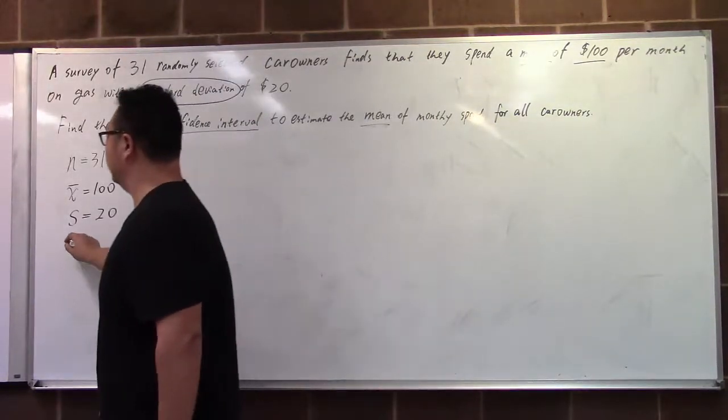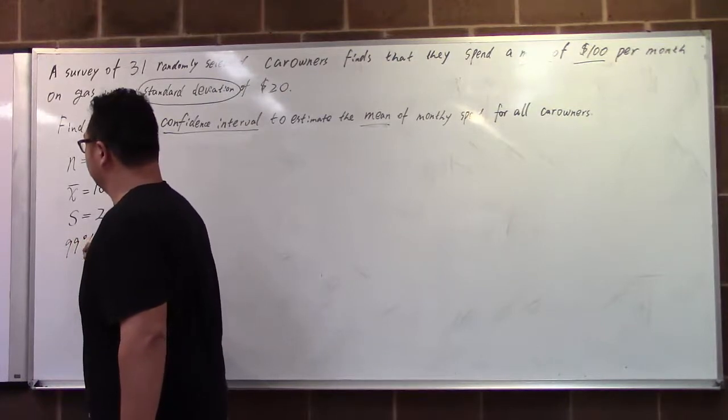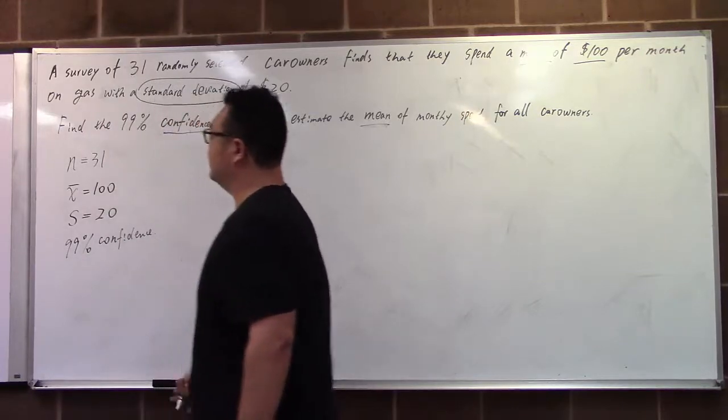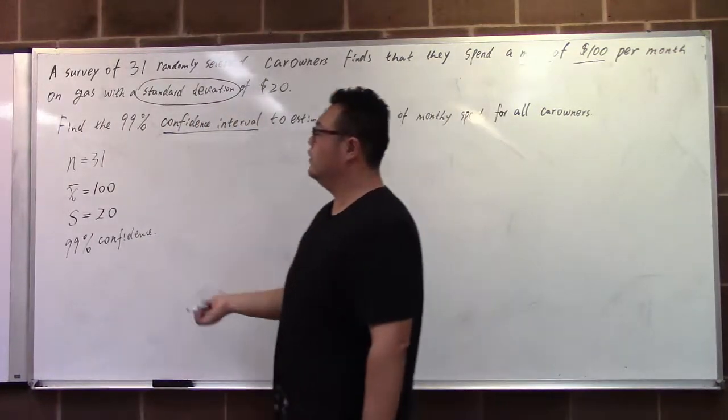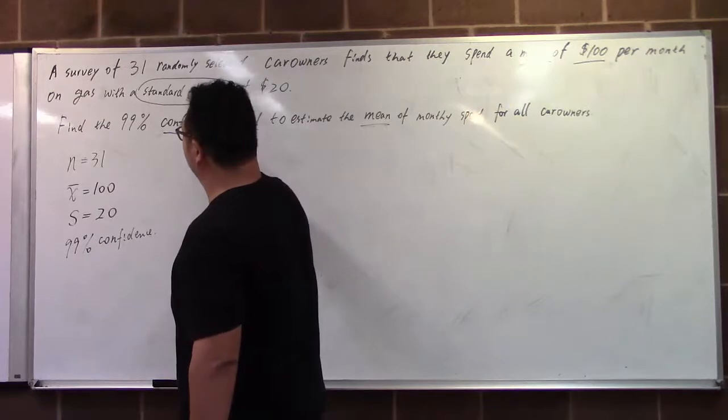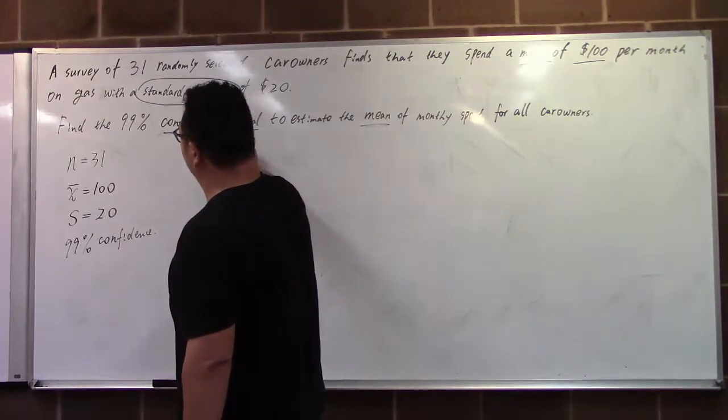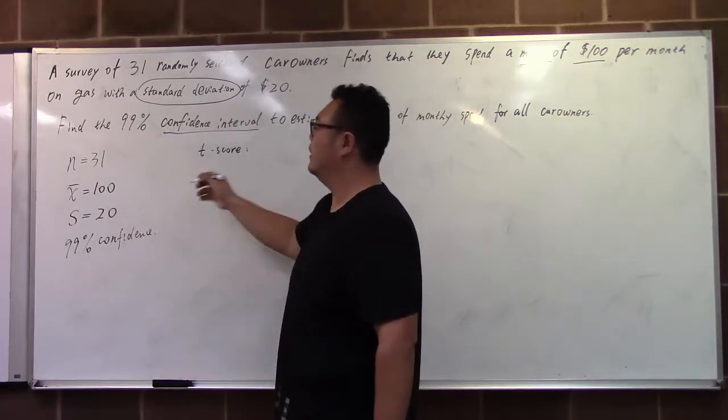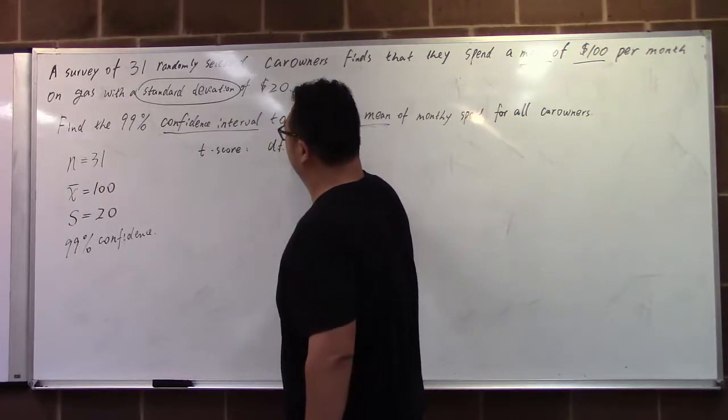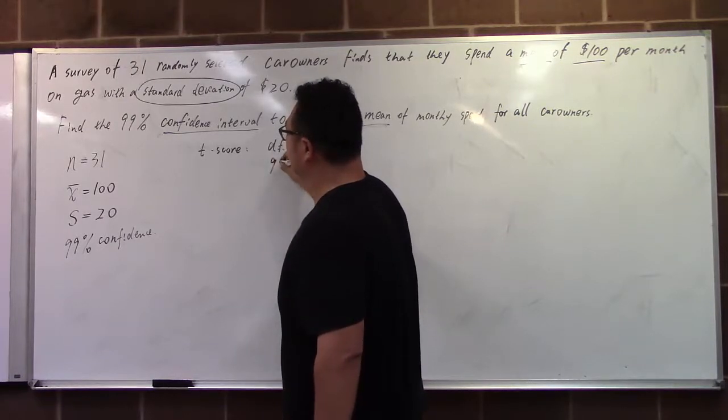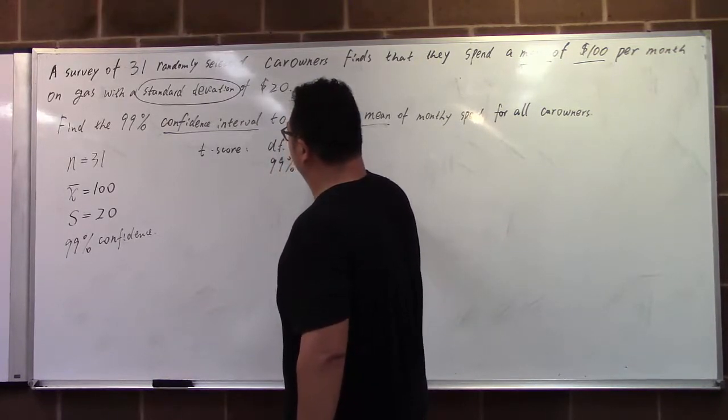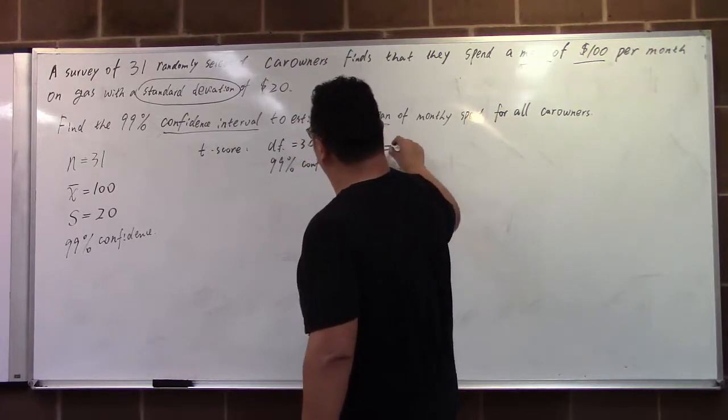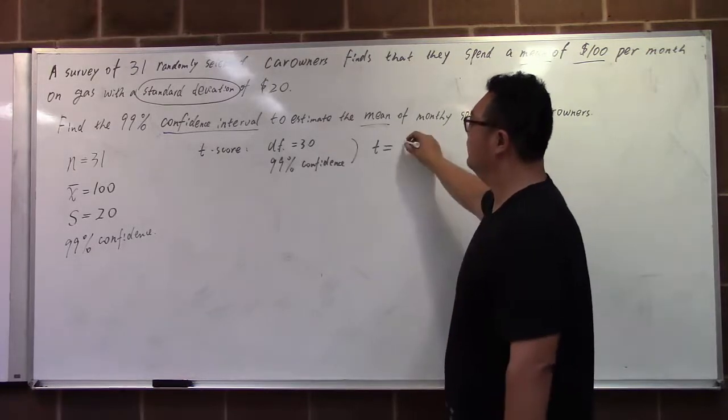It's 99% confidence. We use the t distribution to find the t-score. We need a degree of freedom, which is 30. Based on the table, the t is 2.750.